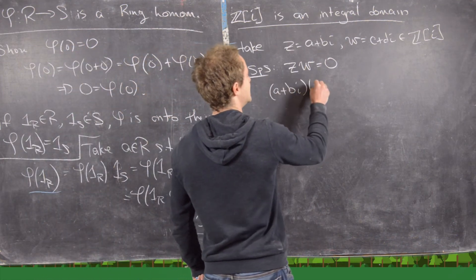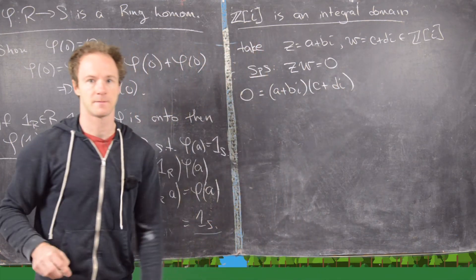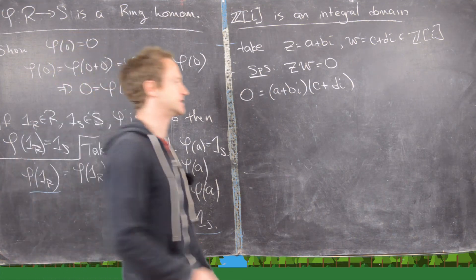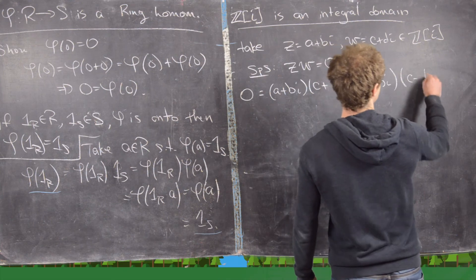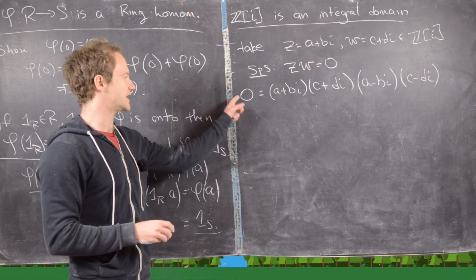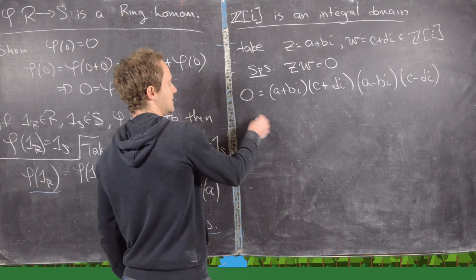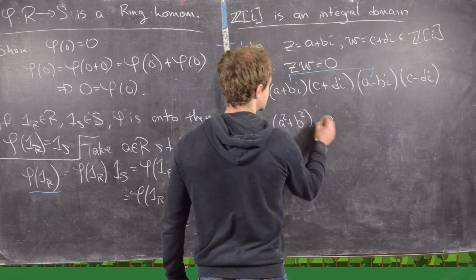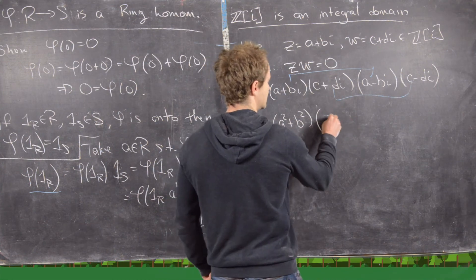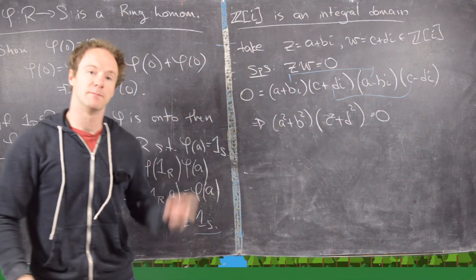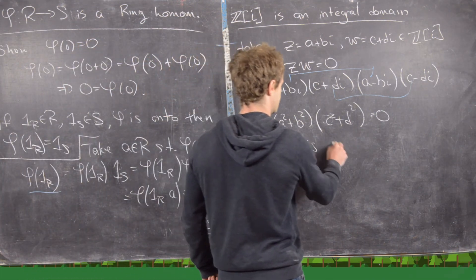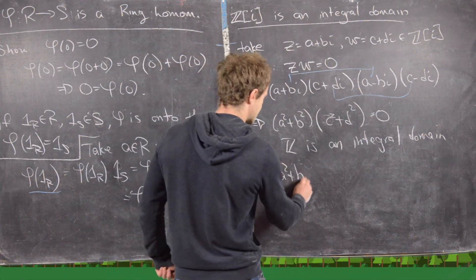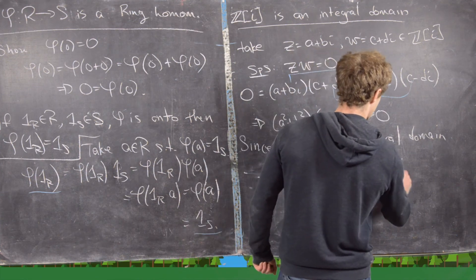We have a plus bi times c plus di equals 0. The trick is to transport this to the integers by multiplying by the complex conjugates. Multiplying both sides by a minus bi times c minus di — which is still 0 — gives us, after combining, a squared plus b squared times c squared plus d squared equals 0. Using the fact that Z is an integral domain, either a squared plus b squared equals 0 or c squared plus d squared equals 0.